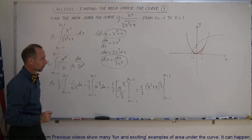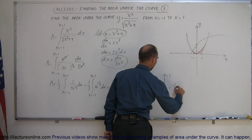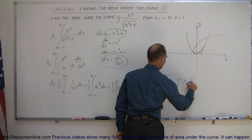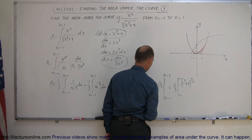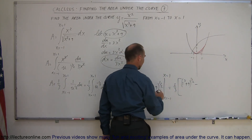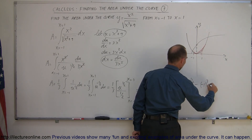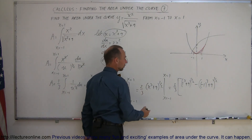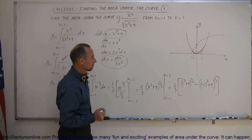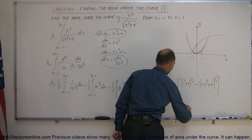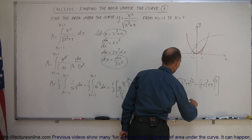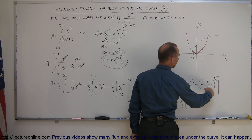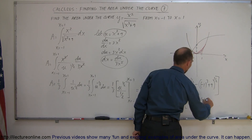Plugging in the upper limit x equals 1: 1 cubed plus 9 equals 10, giving 10 to the 1/2. Plugging in the lower limit x equals negative 1: negative 1 cubed plus 9 equals 8, giving 8 to the 1/2. So the area equals 2/3 times (10 to the 1/2 minus 8 to the 1/2).